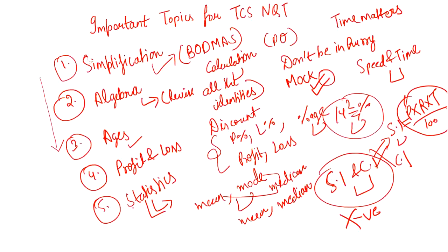Next you can cover SI and CI. I'm not saying you have to leave any topic entirely — I'm providing a plan for which topics are mandatory and which to prioritize to ace the aptitude section. Try your best to prepare as much as possible. If you're asking me for the most important topics, these are the ones I'm recommending so you can answer questions with confidence.